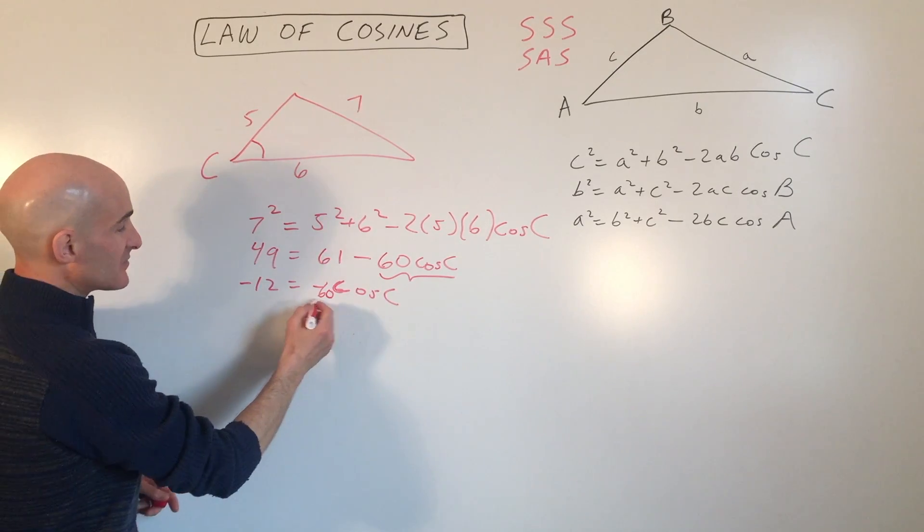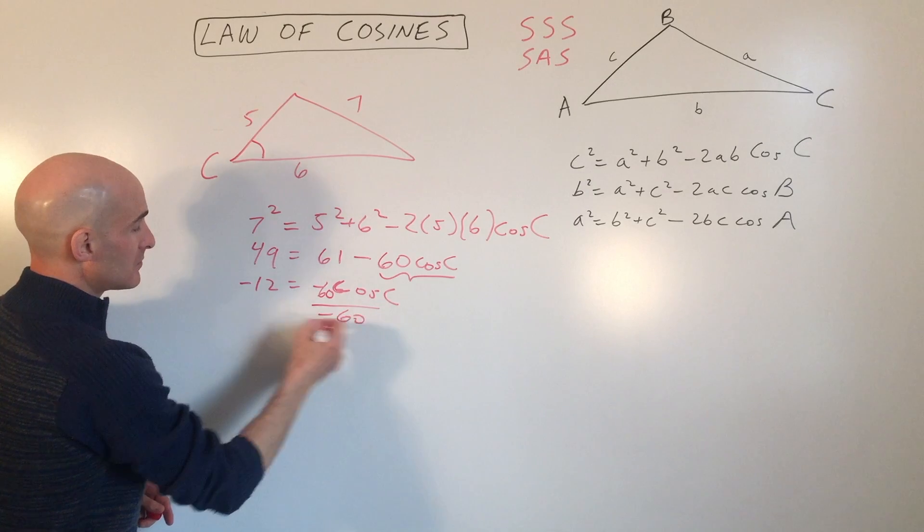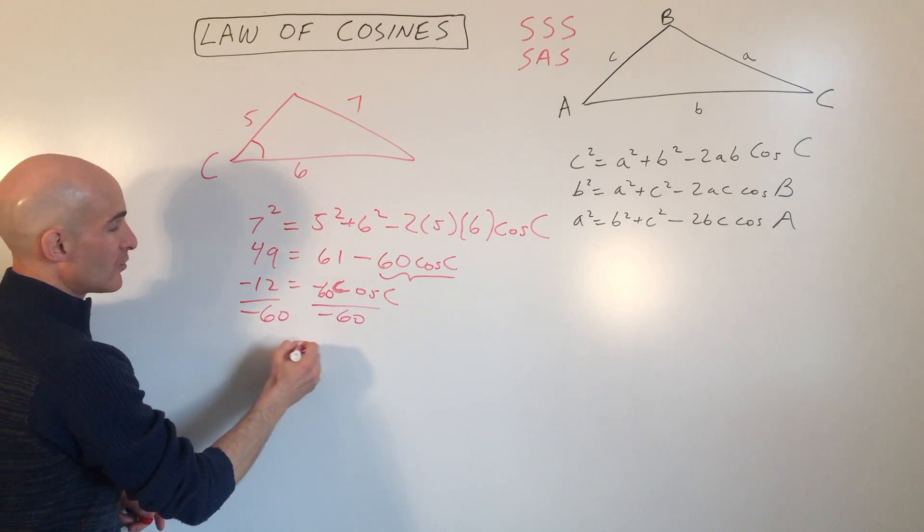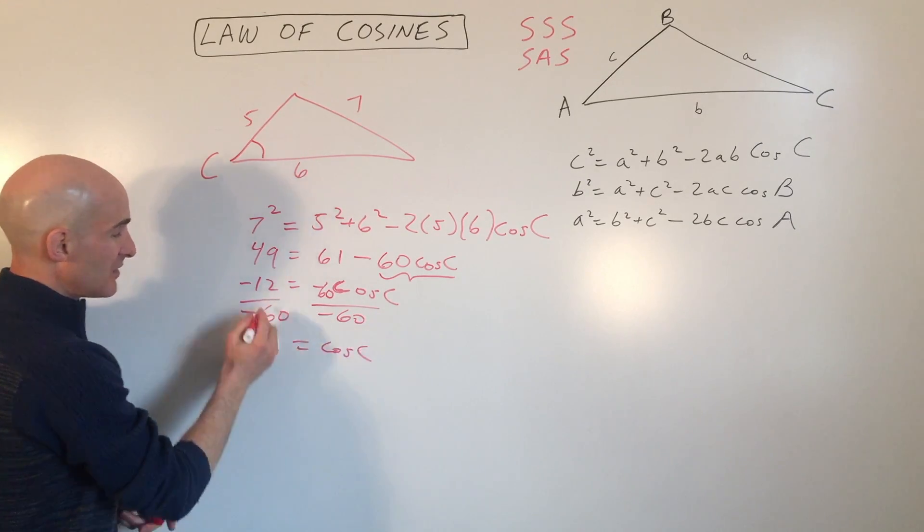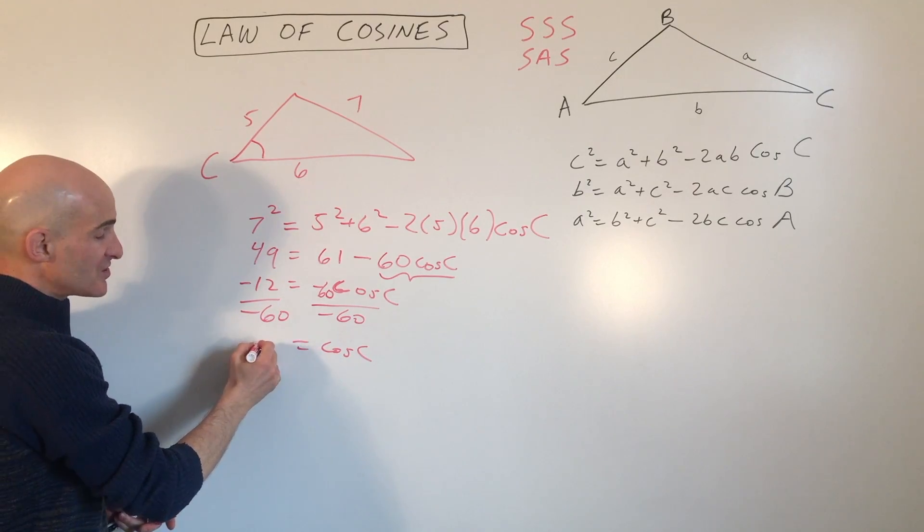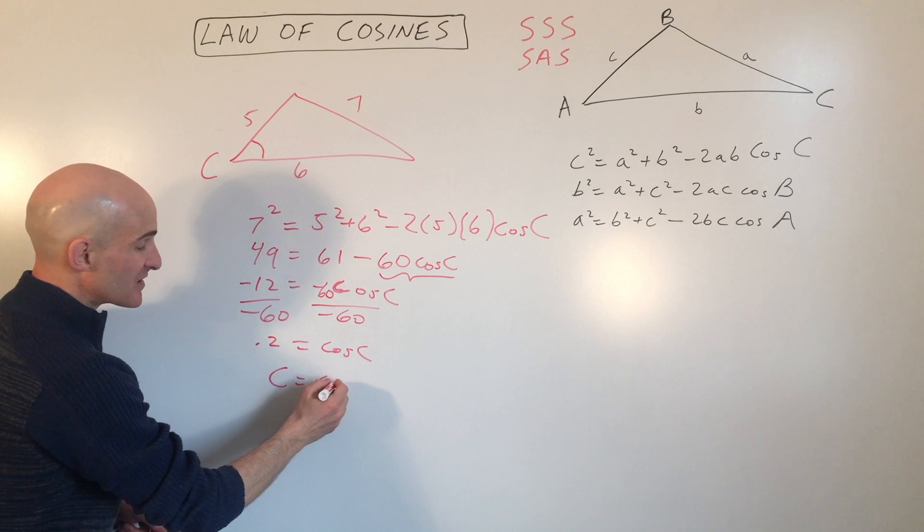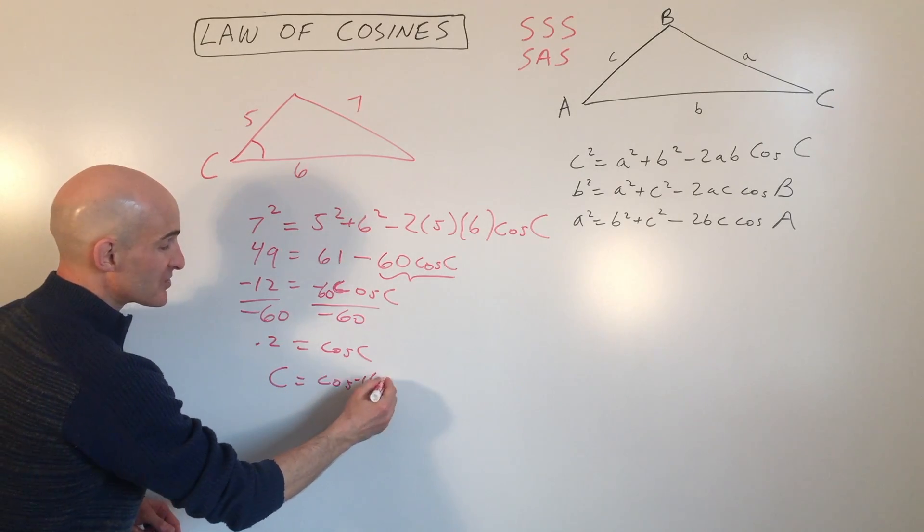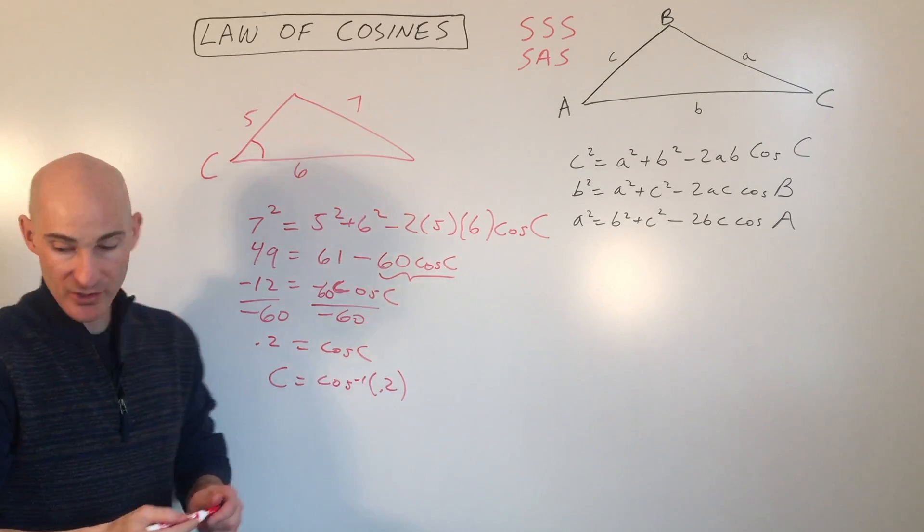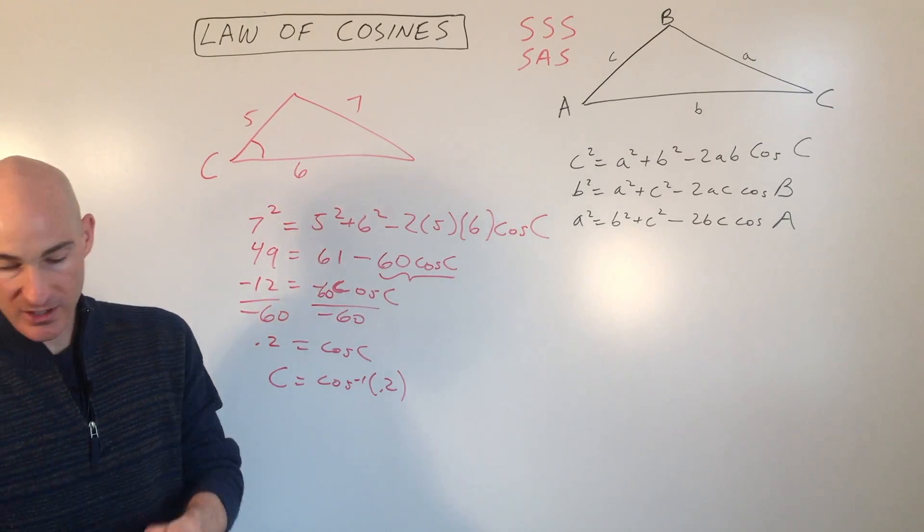And then you divide both sides by negative 60, which equals cosine C. And that comes out to one fifth, which is 0.2. And you take the cosine inverse of both sides, you're going to get C equals the cosine inverse of 0.2. So let's just see what that comes out to real quick here on our calculator.